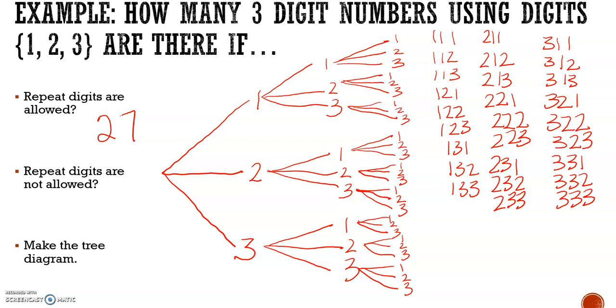When repeat digits are not allowed, let's circle the ones with no repeat digits. There they are. Repeat digits not allowed. There are 6.